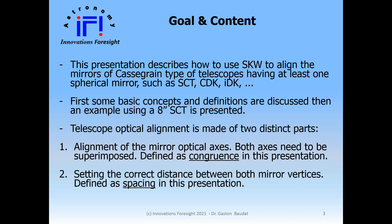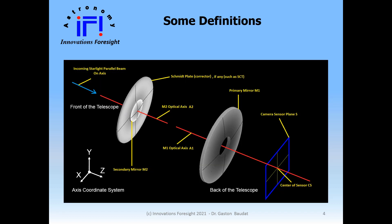Telescope optical alignment is made of two distinct parts. The first is the alignment of the mirror optical axes — both axes need to be superimposed on top of each other. The technical term for that is congruence, and we'll use it throughout this presentation. The second step, once we reach congruence, is to set the correct spacing between both mirrors to achieve optimal performance. Incorrect spacing will produce spherical aberration, making your star image fatter and your FWHM larger than it should be.